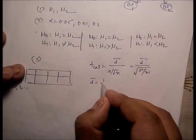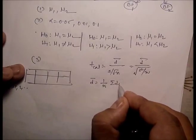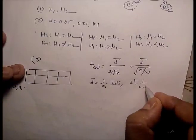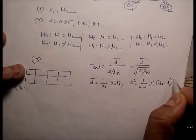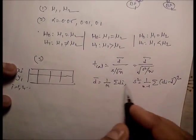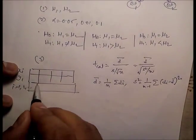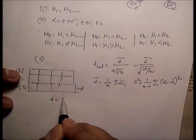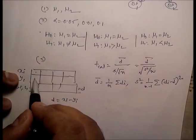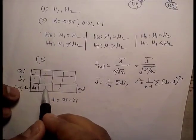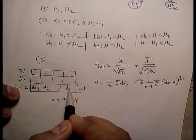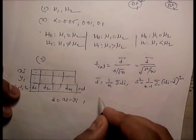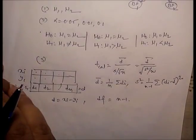The variance s squared equals (1/(n-1)) times summation of (di minus d_bar) squared. Here d is the difference di equals xi minus yi, so d1 equals x1 minus y1, d2 equals x2 minus y2, and so on. The distribution is t with degree of freedom n minus 1.